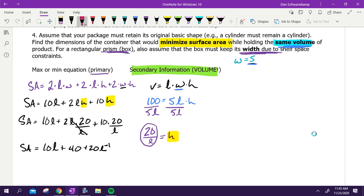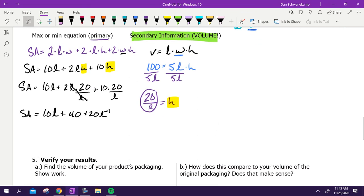We set that thing up. Now we're taking the derivative. We have the surface area with one variable. So 10L is going to become 10. 40 goes away. 200L to the negative 1—multiply by that—so it's going to become negative 200 and then L to the negative 2.